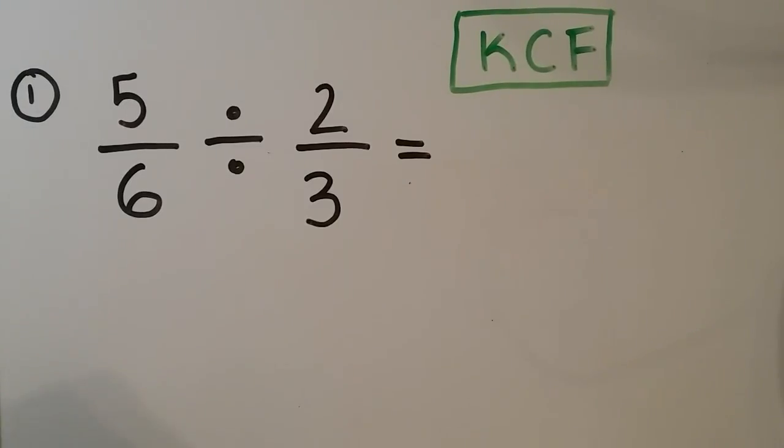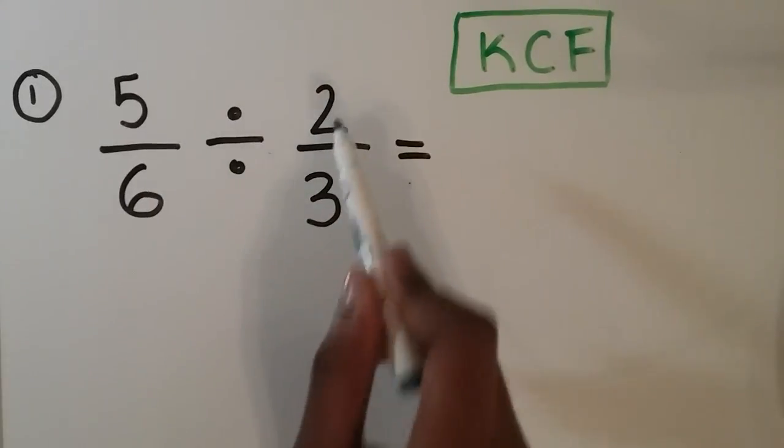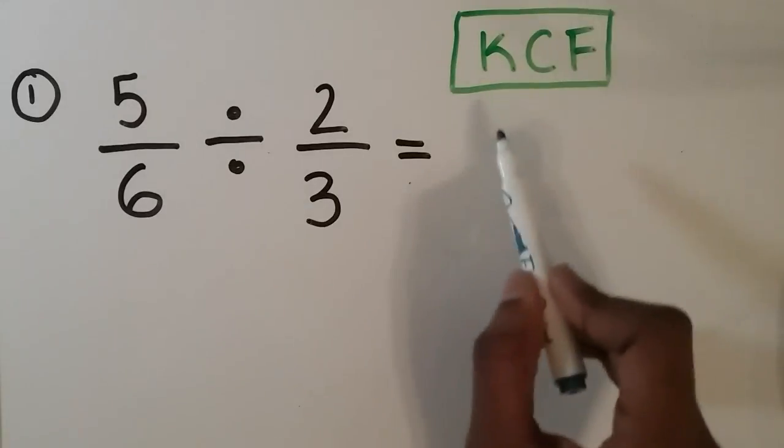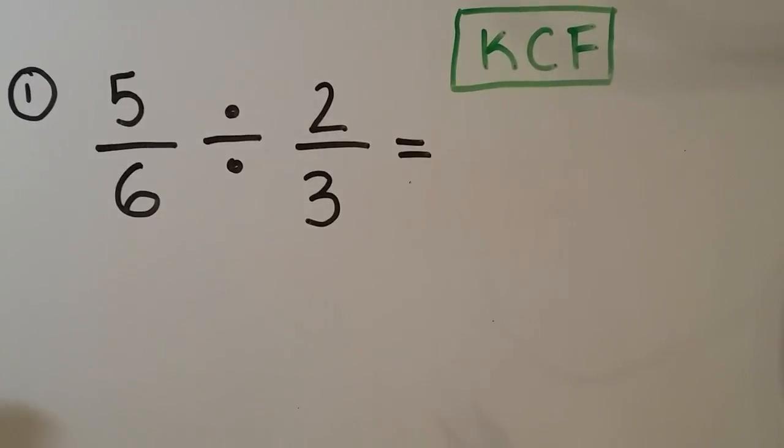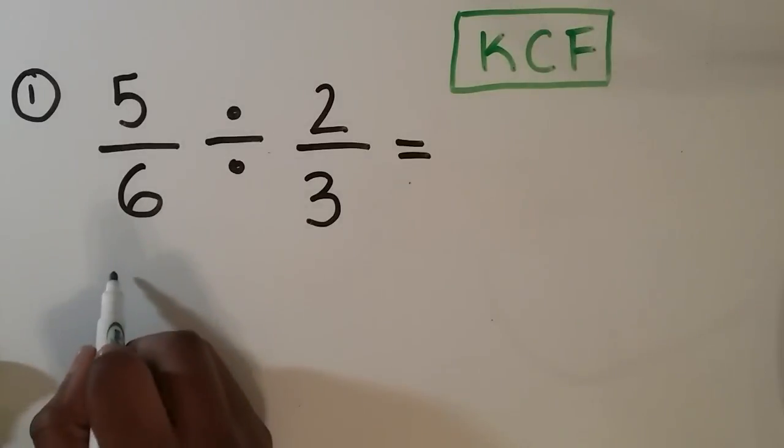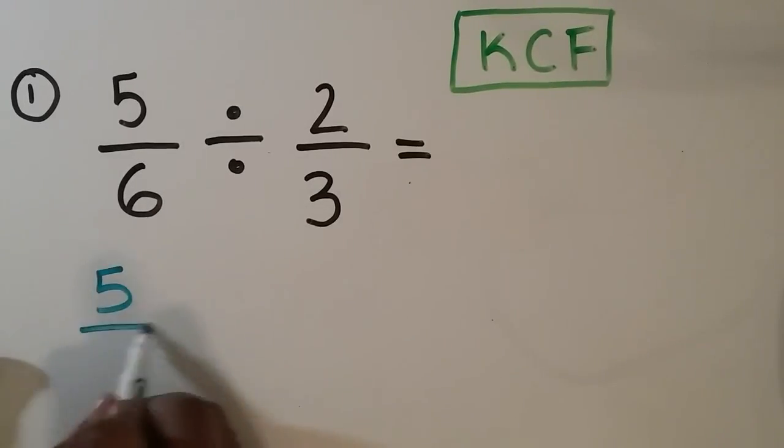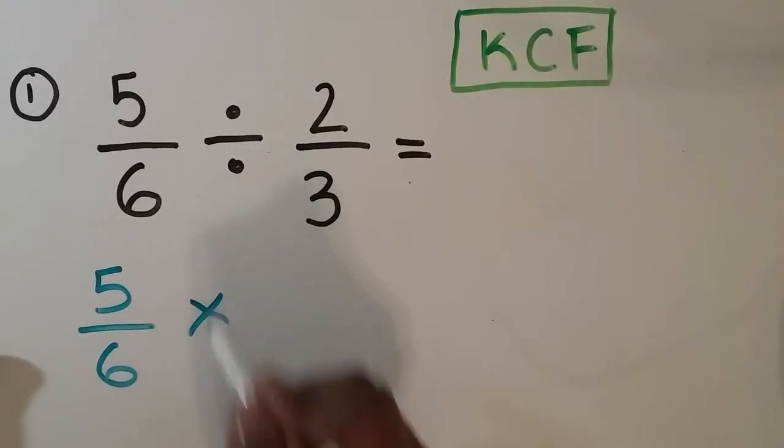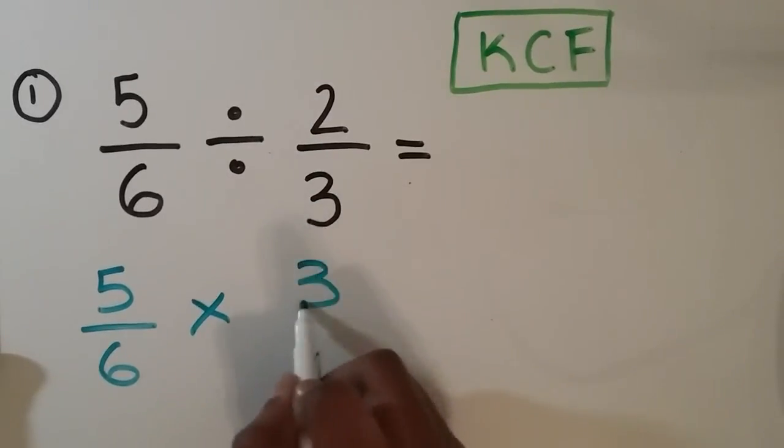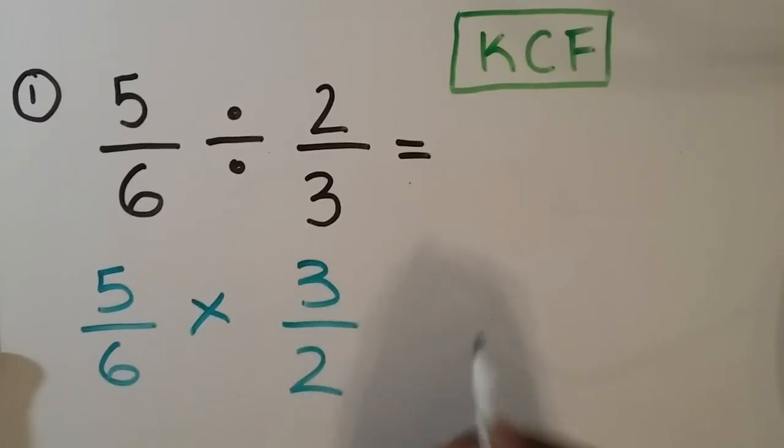Well, let's try some more examples. On number 1, we're being asked to divide 5 over 6 by 2 over 3. And we're just going to keep the acronym KCF up here to remind us what to do. So first, we keep the first fraction the same, we change the division to a multiplication sign, and we flip our last fraction.